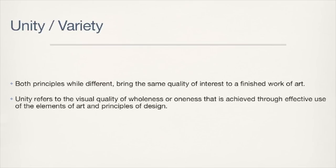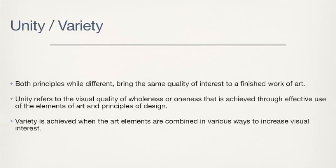Unity, sometimes called harmony, refers to the visual quality of wholeness or oneness that is achieved through the effective use of the elements of art and principles of design. Although a work should have some variety to show visual interest — for instance, an assortment of shapes of a variety of sizes attracts more attention than shapes all the same size. Variety is achieved when the art elements are combined in various ways to increase visual interest, but the elements must have some unity or it will look like an unorganized mess.